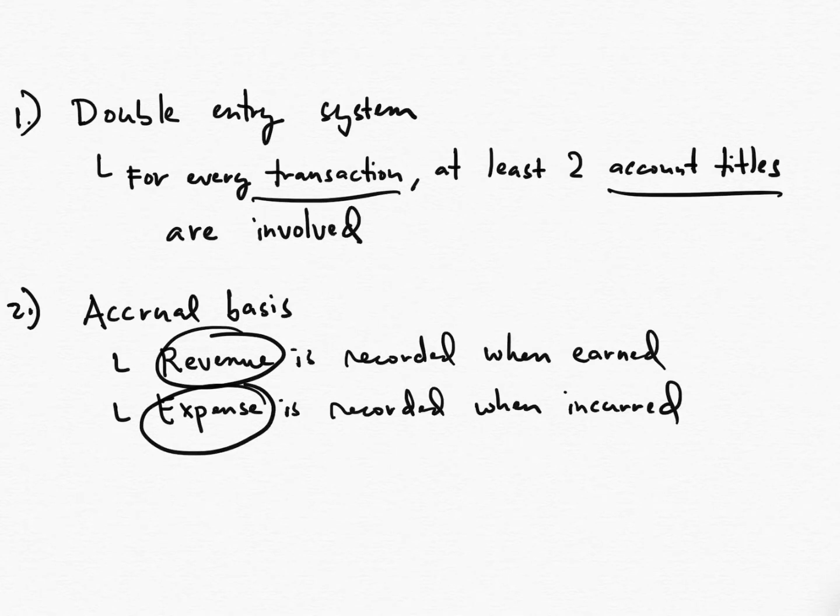Now let's talk about expense. So a specific expense, for example, utility expense, you will record it once you receive the bill from Meralco, regardless of payment. It is implied that you already used or incurred electricity upon the receipt of the bill because why would Meralco charge you, right? So once you receive the bill from them, the assumption is that you used the electricity and following the accrual basis, you will record an expense regardless of cash.